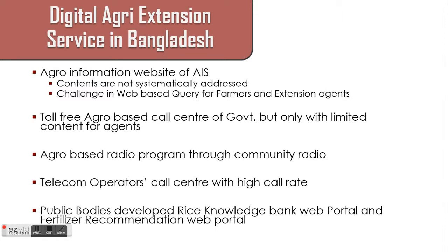There is a department called Agriculture Information Service. They have a website, but the contents are not systematically organized. If you place a query, you never know when you will get the answer because the platform is not mechanized. There is a toll-free call center from the government — a good initiative — but they have a lack of content, with only a question bank of 5,000 answers for farmers. There are two community radios providing agro-based services, but they don't cover the whole country. Telecom operators also have call centers, but their call rates are huge. Additionally, the Bangladesh Rice Research Institute and Fertilizer Recommendation Institute have their own portals, but these are only accessible to researchers and academics, as farmers don't have laptops or desktops to access them.